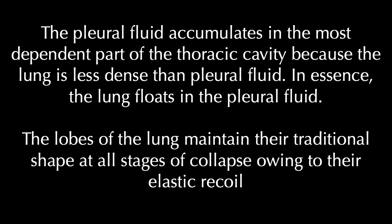Regarding the pleural space and radiographic appearance: pleural fluid accumulates in the most dependent part of the thoracic cavity because the lung is less dense than pleural fluid — in essence, the lung floats in pleural fluid. The lobes of the lung maintain their traditional shape at all stages of collapse owing to their elastic recoil.